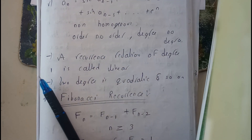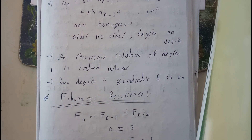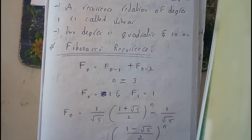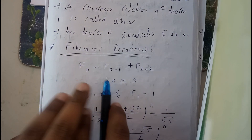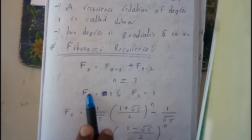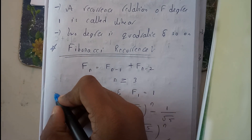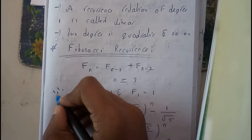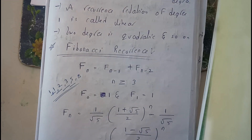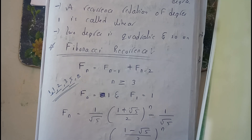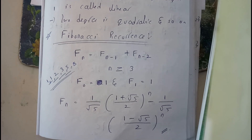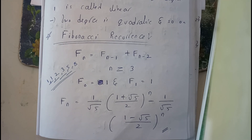A recurrence relation of degree one is called linear, degree two is quadratic, and so on. A classic example of a recurrence relation is the Fibonacci series: F(n) = F(n-1) + F(n-2), where n > 2, F(0) = 1 and F(1) = 1. The two previous values sum to give the next, producing the series 1, 1, 2, 3, 5, 8, and so on. I hope you understood all things about recurrence relations. Thank you for watching.